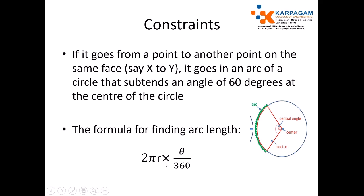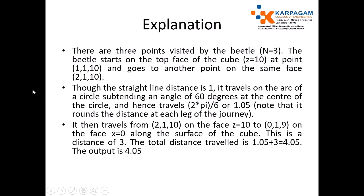The arc length formula is 2πR × θ/360. For example, there are three points visited by the beetle, N equal to 3. The beetle starts on the top face of the cube where Z equals 10, at point 1,1,10, and goes to another point on the same face. Same face means we need to find both the straight-line distance and the arc length as given in the constraint.